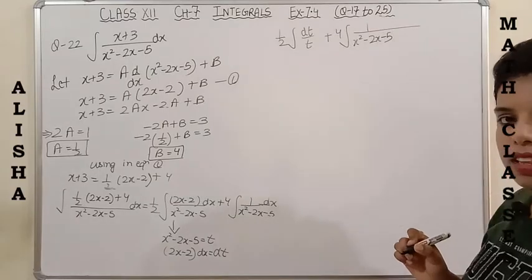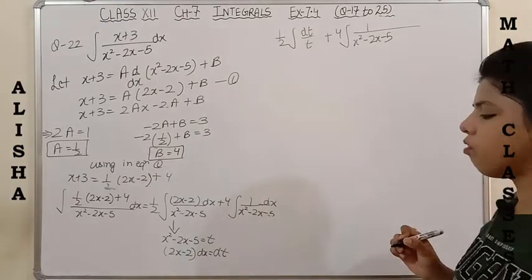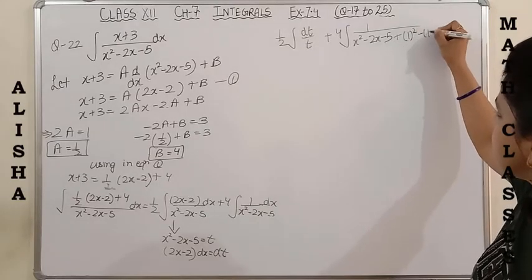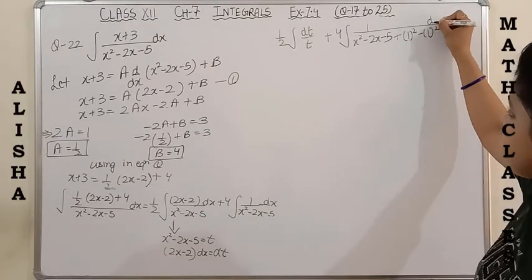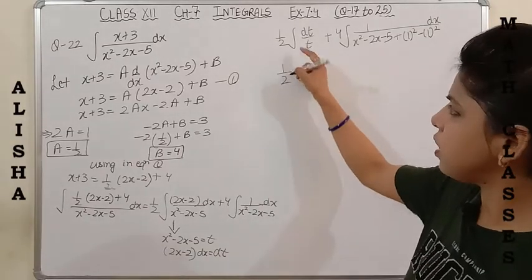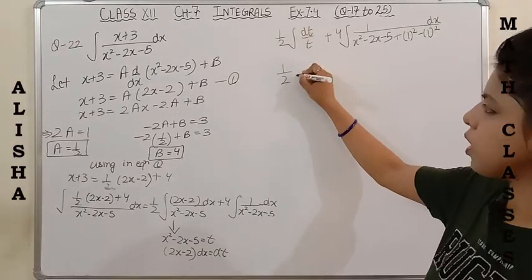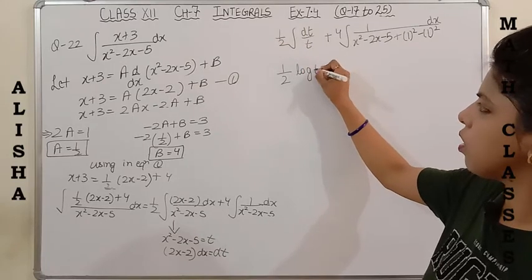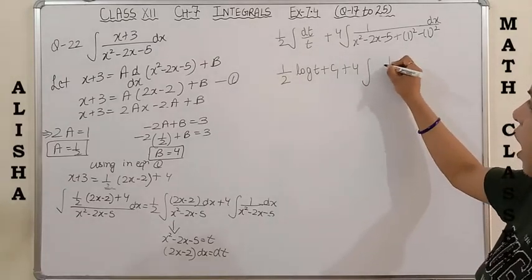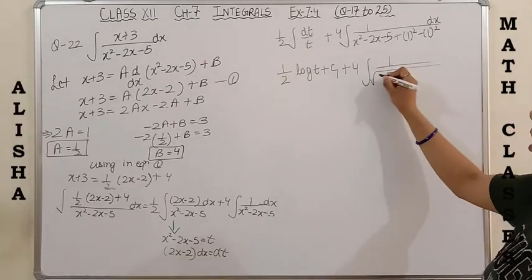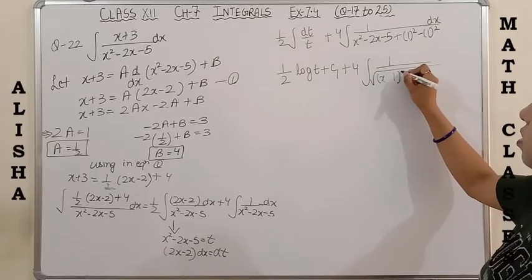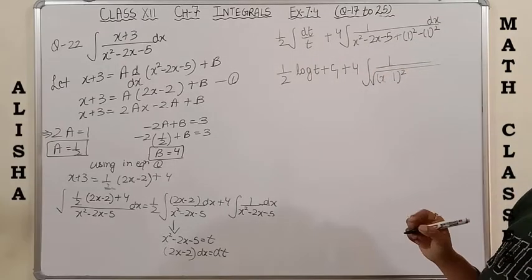The coefficient of x² is 1, so adding and subtracting 1² — that is the complete square method. The integration of 1/t with respect to t is log t plus constant c₁. Now in the second integral, the coefficient of x is negative, so it becomes x minus 1 whole square.